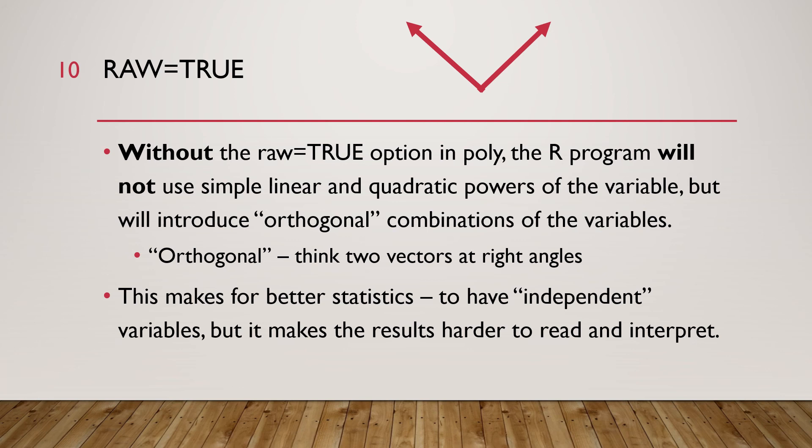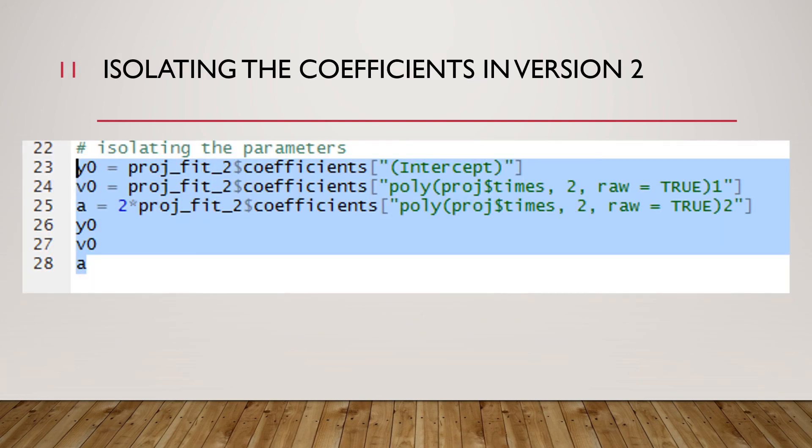This makes for better statistics to have independent variables but it makes it harder to read the results and compare the results say to what was in Excel or the other linear model. So we're going to stick with the raw equals true approach.